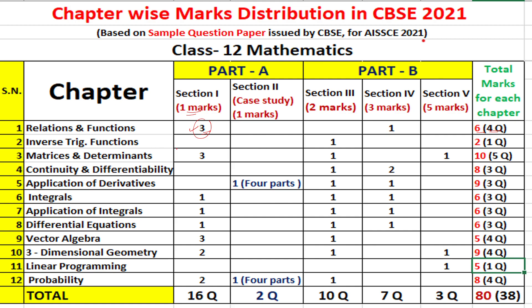In Inverse Trigonometric Functions (ITF), one question of 2 marks will be asked. It is the easiest topic with only one exercise remaining, as the rest is removed. That is 2 marks for one question. These are the topics of the first unit.